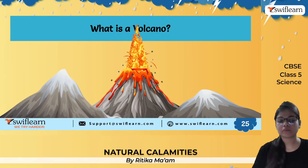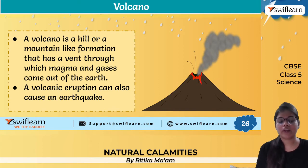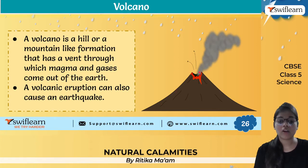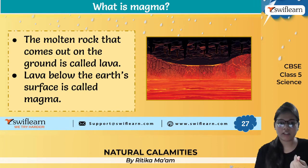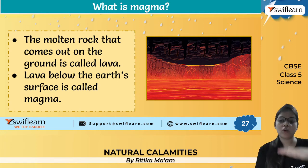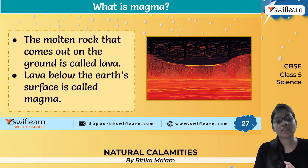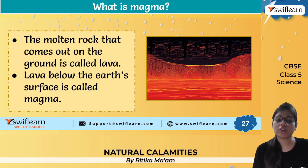A volcano is a kind of hill or mountain-like formation. It has a vent — an opening — from which magma, gases, and various molten liquid materials come out of the earth. Volcanic eruptions can sometimes also trigger earthquakes. The molten rock material that comes out of the ground is known as lava. When it is below the earth's surface it is called magma; when it comes out it is called lava. Over time, lava solidifies on the surface.